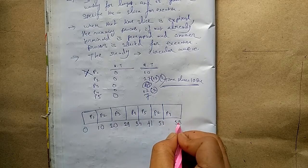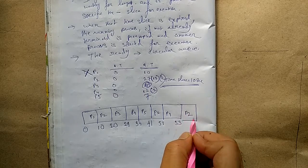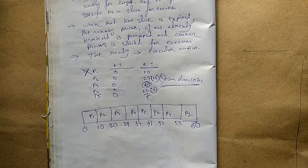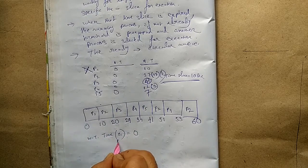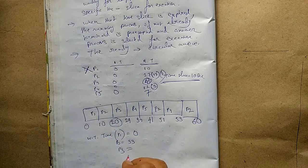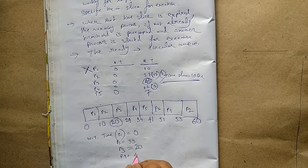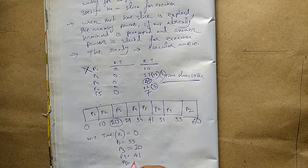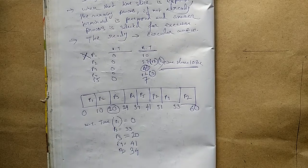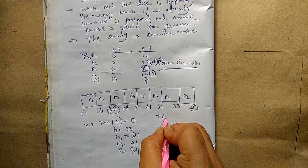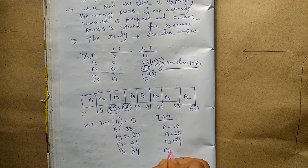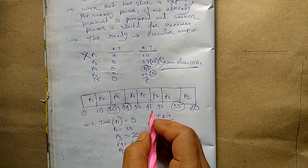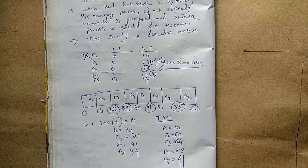Process P4 executes its remaining 2 seconds to time 53. Next, process P2 finishes at time 60. This is the Gantt chart. The waiting time for process P1 is 0, process P2 is 33, process P3 is 20, process P4 is 41, process P5 is 31. We can calculate the average waiting time from these values. The turnaround time for process P1 is 10, process P2 is 60, process P3 is 24, process P4 is 53, and process P5 is 41. From this, we can calculate the average turnaround time.